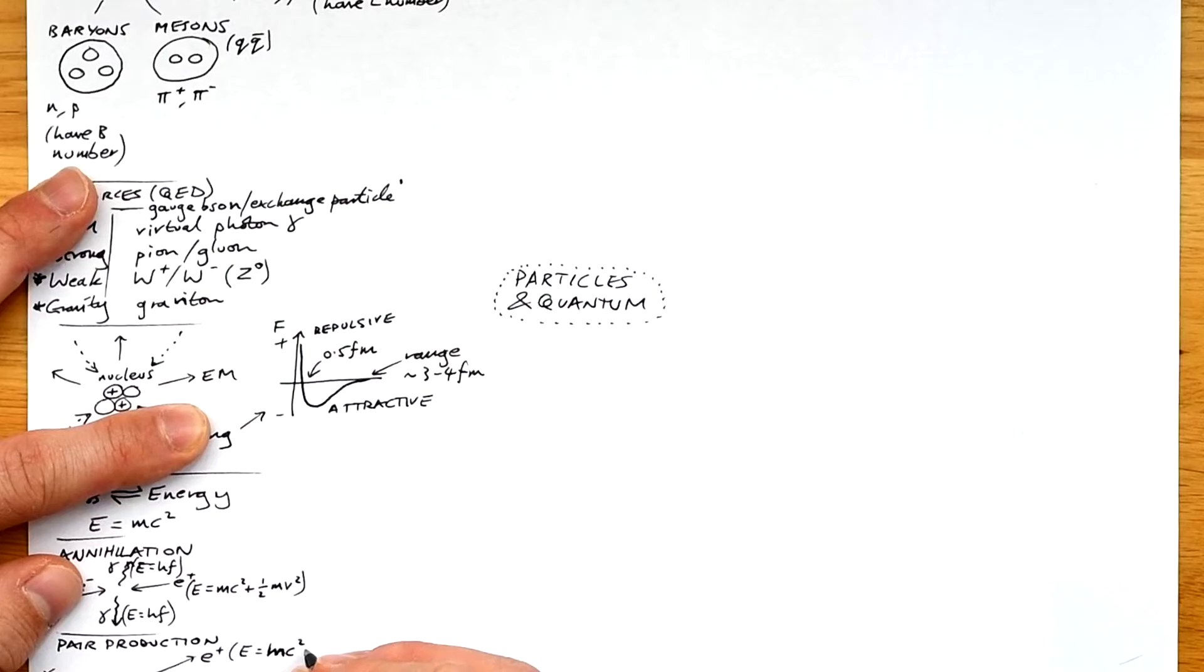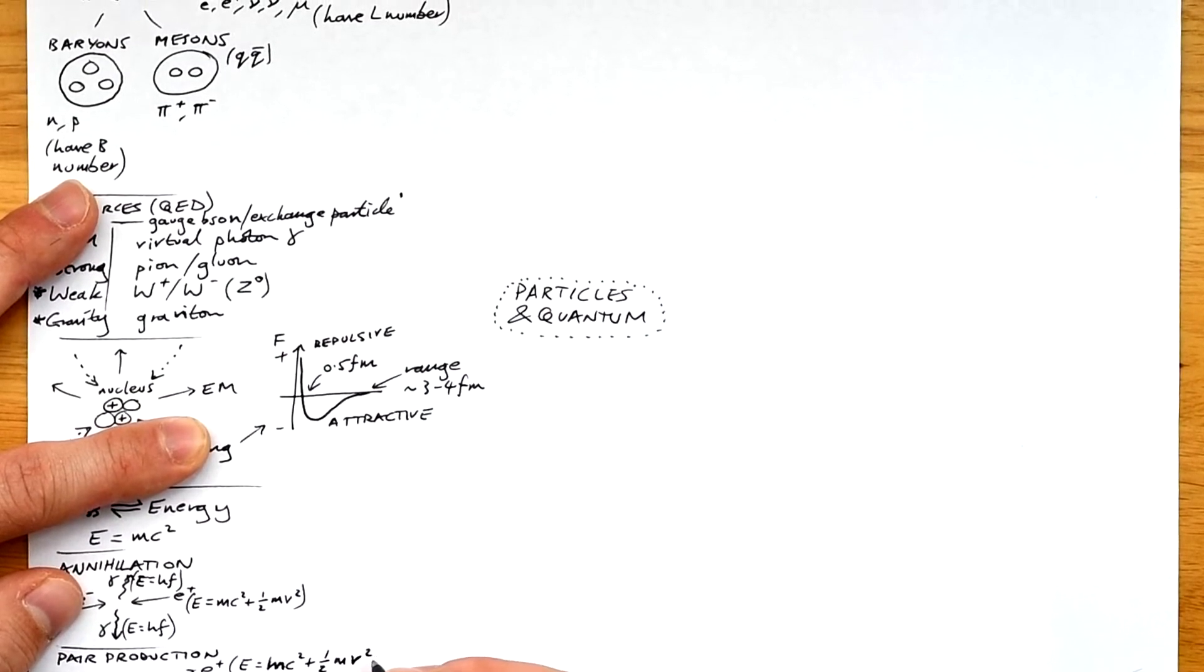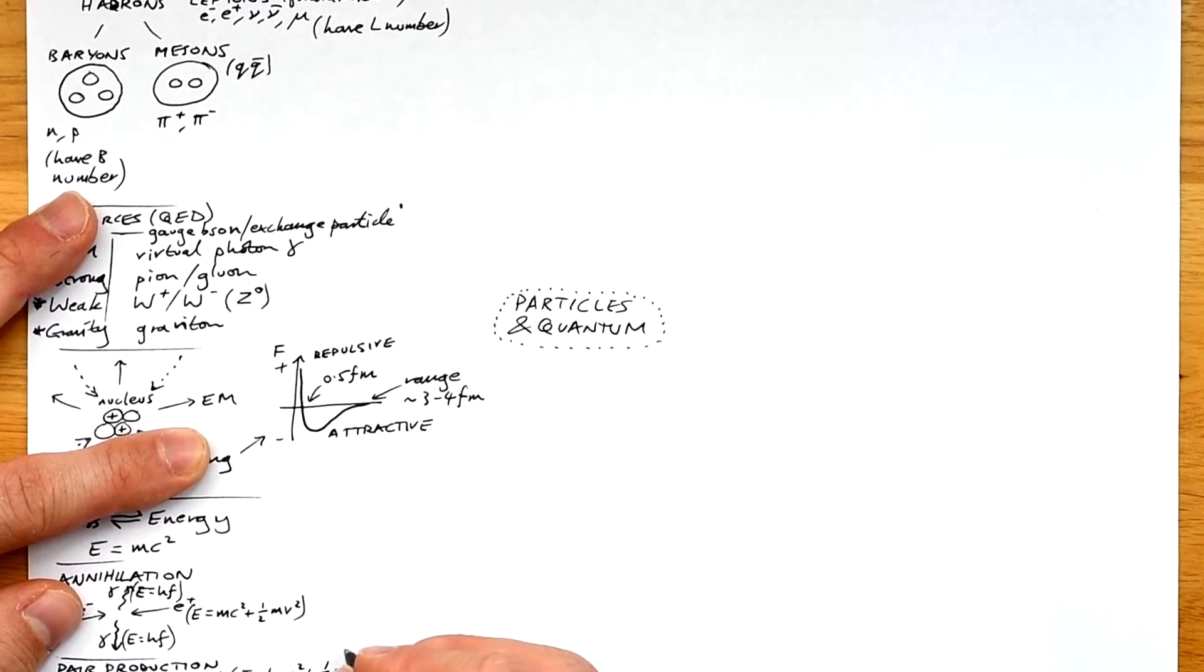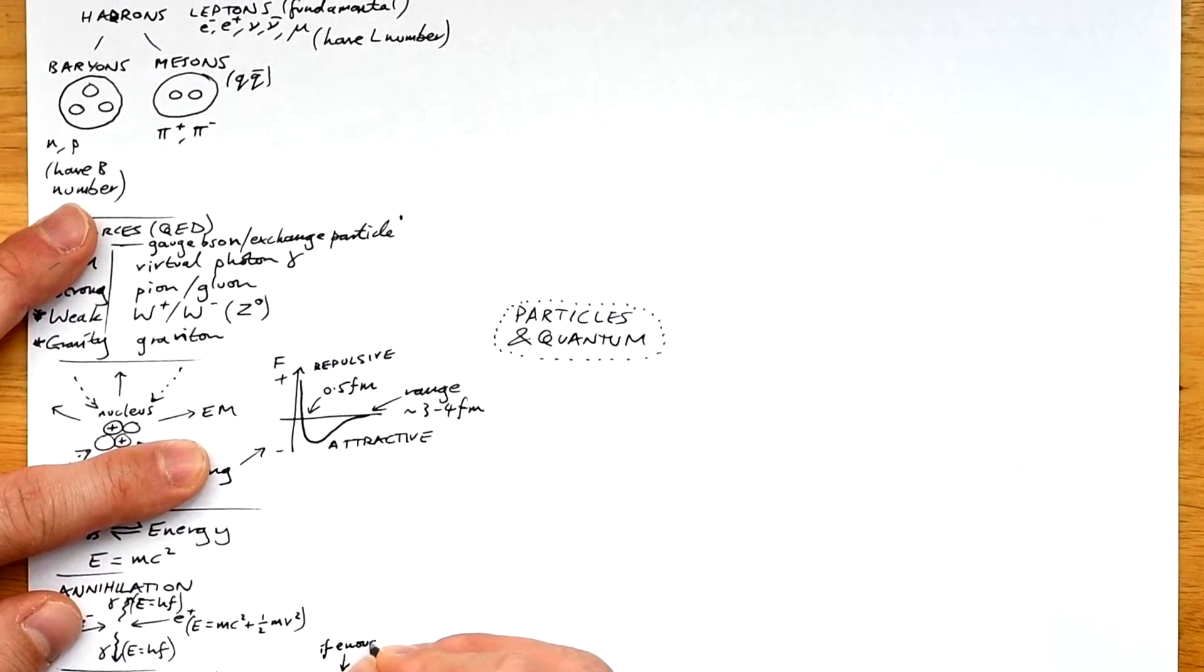Of course, the photon must have at least the same amount of energy as the rest energy of the particles. So again, E equals mc squared. But if the photon has more than the minimum amount of energy, then the leftover energy is turned into kinetic energy of the particles afterwards.